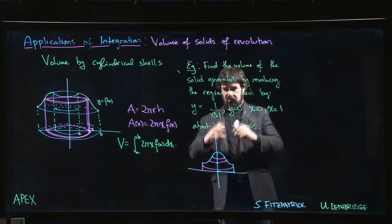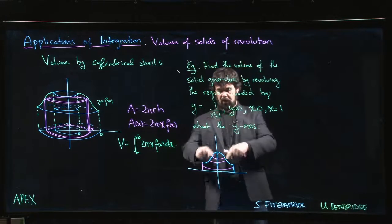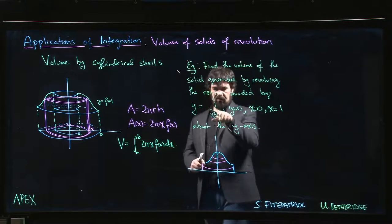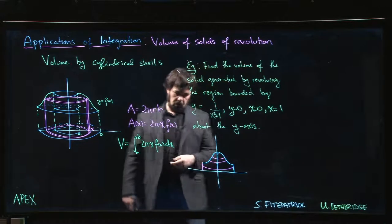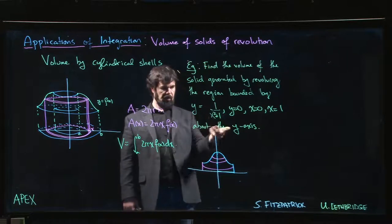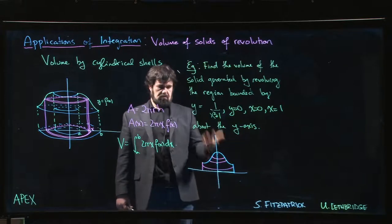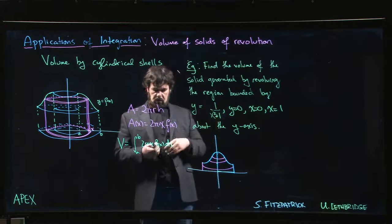We'd have to do kind of a solid cylinder from 0 up to one half, and then from one half up to 1, we'd have to do disks where the radius is given according to this. But the other problem is we'd have to—that radius would be, we need x as a function of y, so we'd have to solve this for y. It's not that bad, but shells are going to be easier.